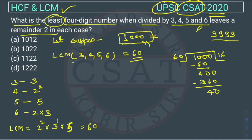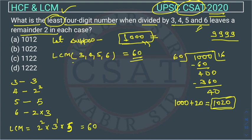We have 40 and we want to reach a multiple of 60, so we need 20 more. If we add 20 to 1000, the number becomes 1020. Now 1020 is divisible by 60, which means it is also divisible by 3, 4, 5, and 6. So 1020 is a four-digit number that is divisible by all these numbers.